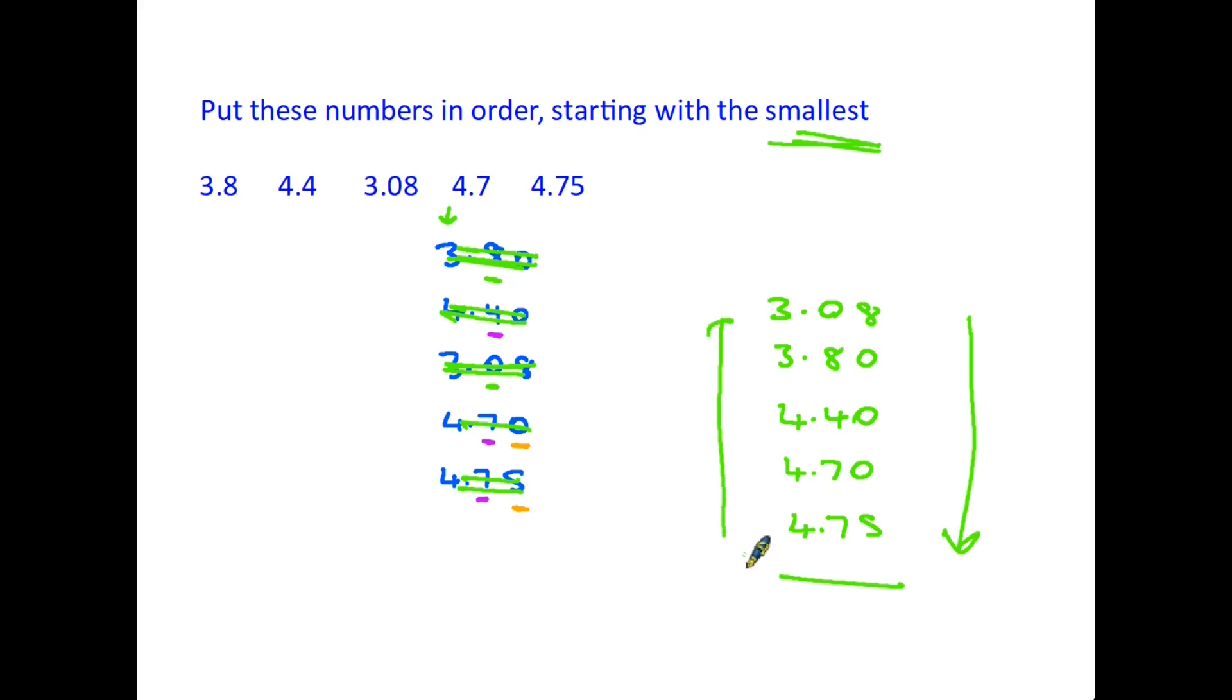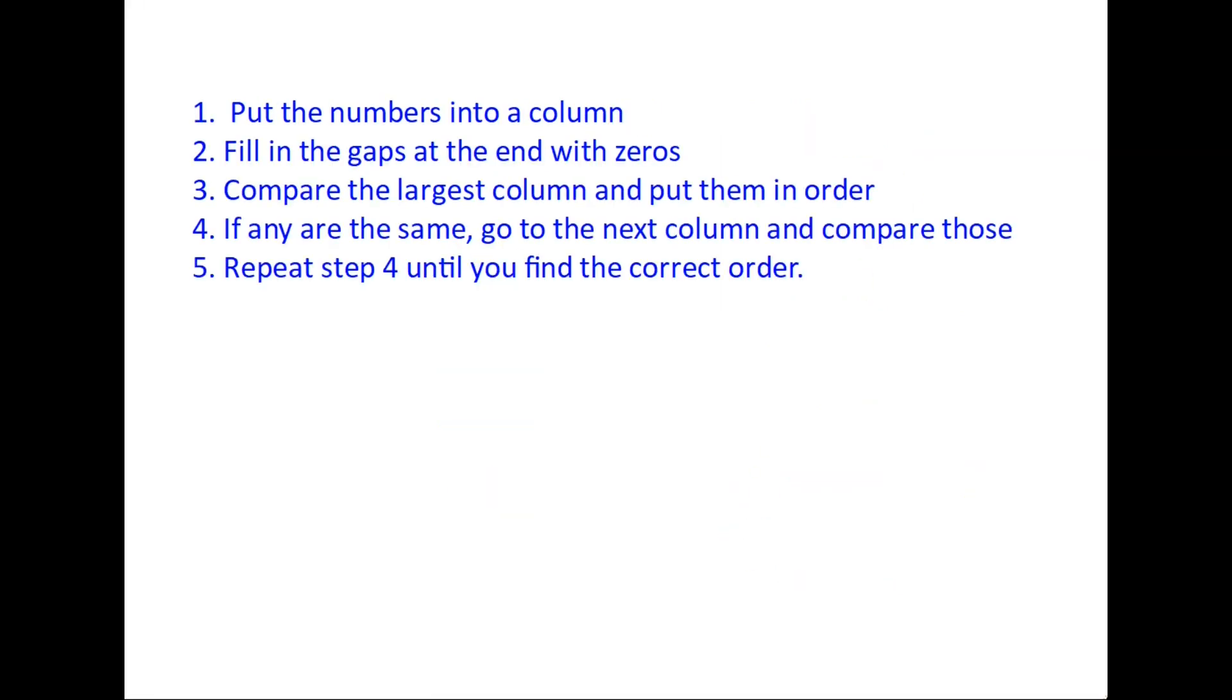A quick summary then. The first thing we did was put the numbers into a column with the decimal points all lined up, and we filled in the gaps at the end with zero so all the numbers were the same length. Then we compared the largest column, the whole numbers, and we put them in order depending on whether you want to start with the largest or the smallest. If we found any of the same, we go to the next column on and we look at those and put those in order. If that column has some that are the same, we repeat that by going to the next column again until we've got the numbers all sorted in the correct order.